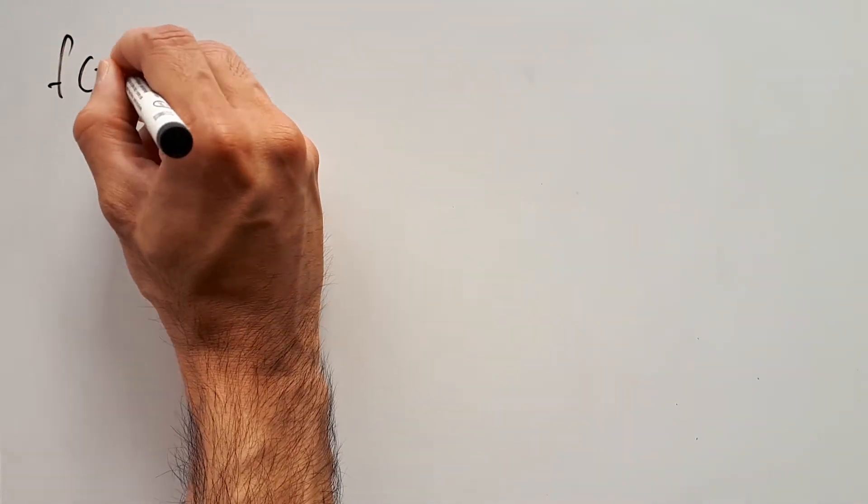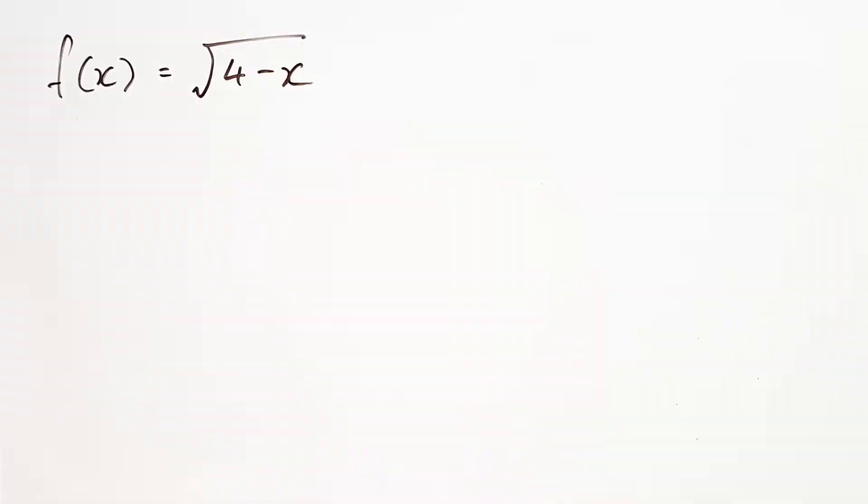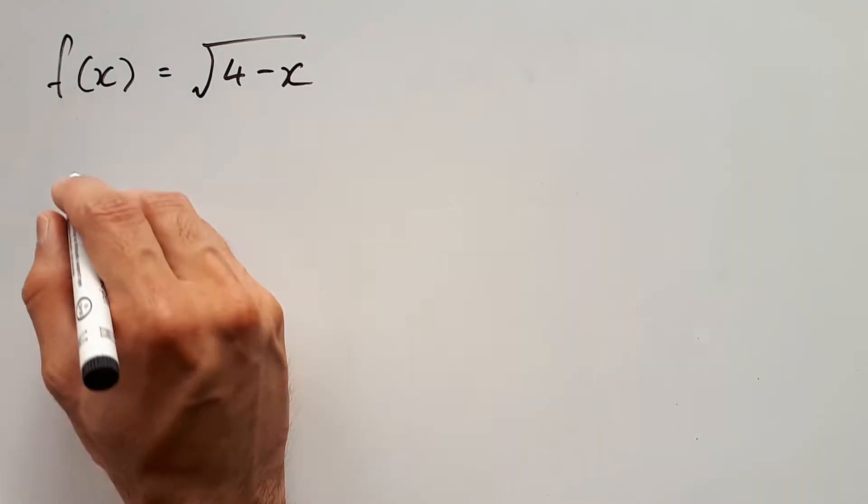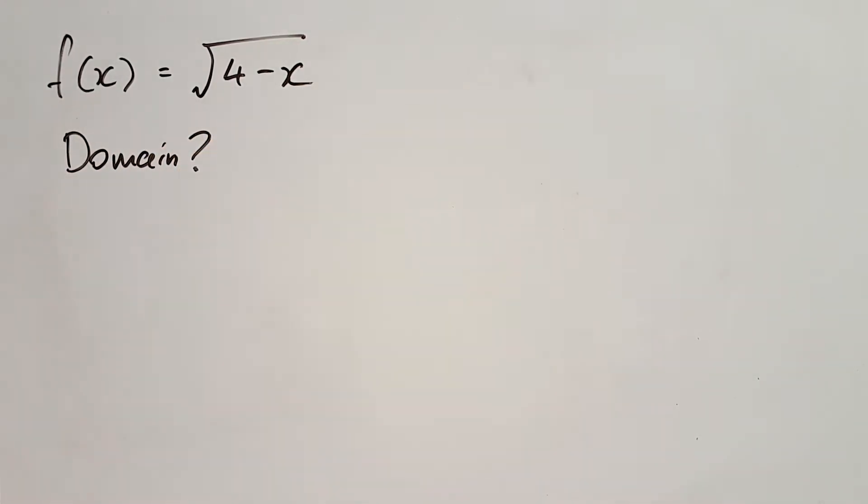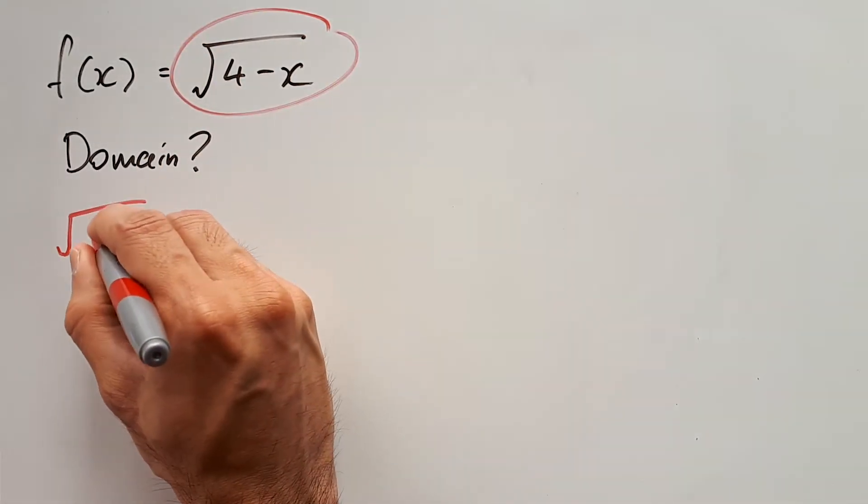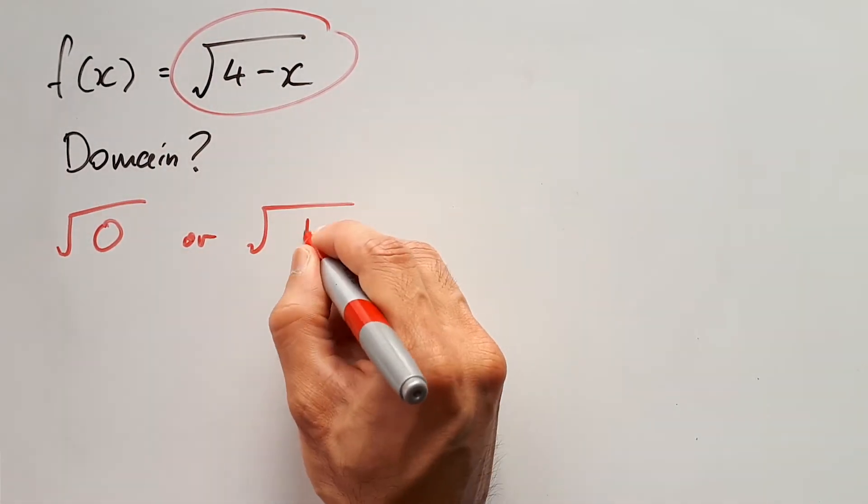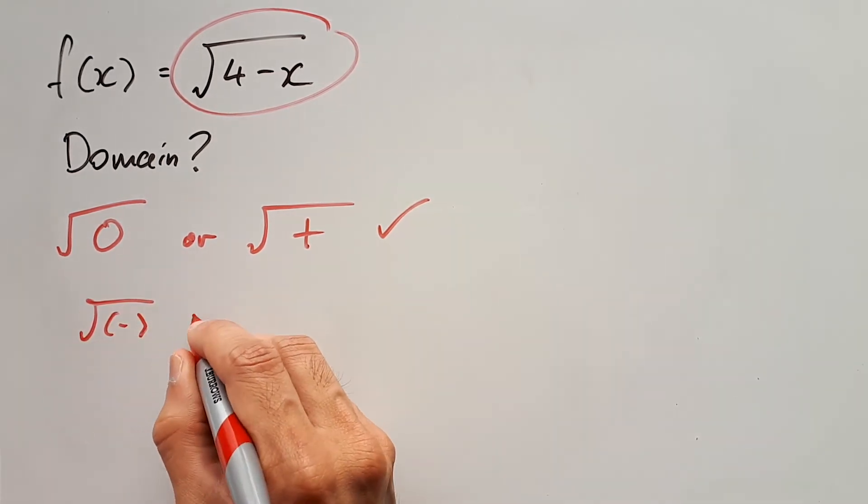First up, we have f(x) equals square root of 4 minus x. Question, what is the restriction on this domain? The major rule is a square root, so as long as the inside of that is 0 or positive, we'll be fine. It cannot be negative.